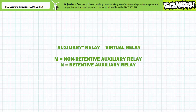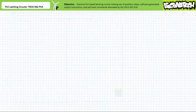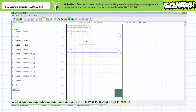Let's first examine holding circuits made possible through the use of virtual relays. The TECO SG2 PLR has two types of virtual relays: non-retentive auxiliary relays that do not maintain the status of the coil and associated instructions at power off, signified by an M, and retentive auxiliary relays that do maintain the status of the coil and associated instructions at power off, signified by an N. Using the TECO SG2 PLR client programming software, we can create a holding circuit using a non-retentive auxiliary relay in the following fashion.